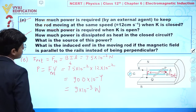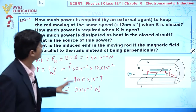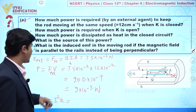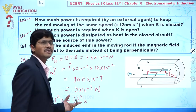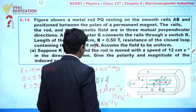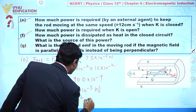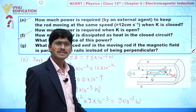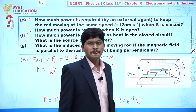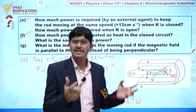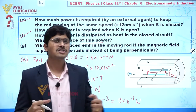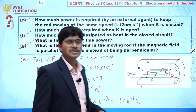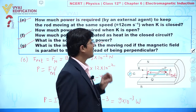Part (f): How much power is dissipated as heat in the closed circuit? Power = I²R = (1)² × 9×10⁻³ = 9×10⁻³ watt, which equals 10⁻³ watt (approximately). The source of this power is the external force applied to keep the rod moving at constant velocity — the mechanical work done by this external force is converted into heat in the circuit.